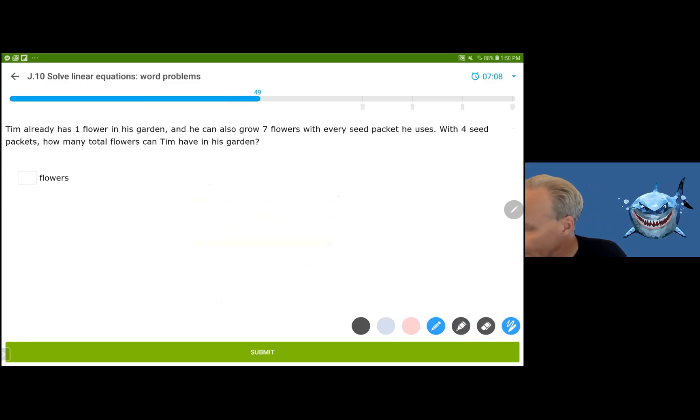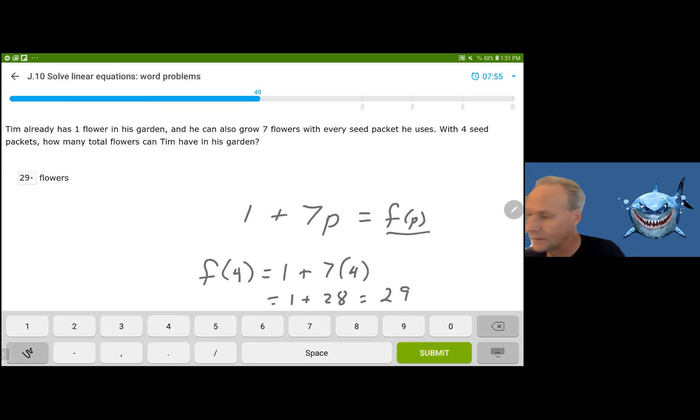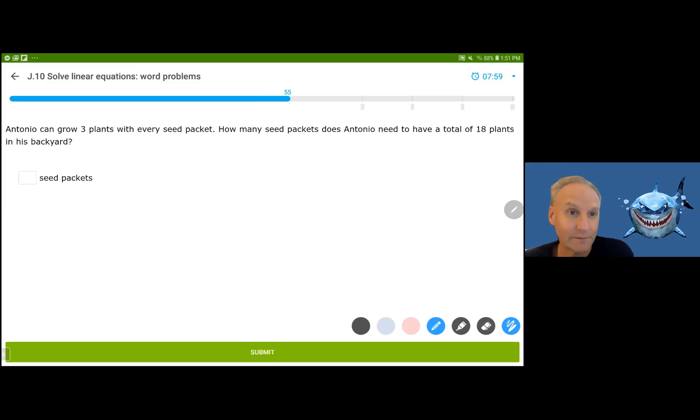Tim already has one flower in the garden and grows seven flowers with each seed packet. I'm going to use P for seed packets. And this is going to be the number of flowers in the garden. So based on the number of seed packets. That's our functional notation. The number of flowers based on the seed packets is one plus seven P with four seed packets. So we want how many flowers will he have if he has four seed packets. And you substitute this, the four for the P. And that's going to be one plus 28 or 29 flowers. I know I'm being really formal here, but I want you guys to learn the functional notation early.